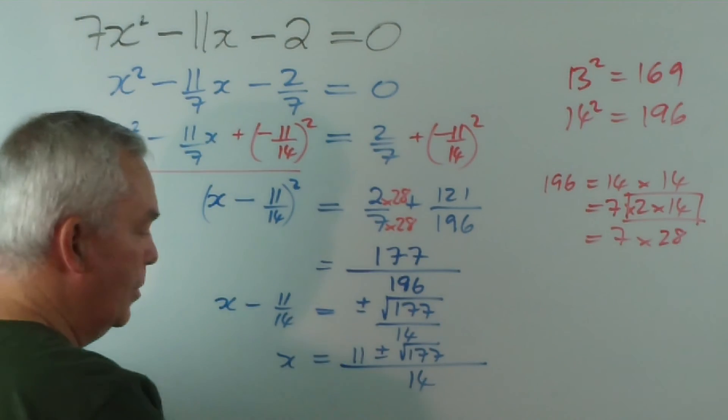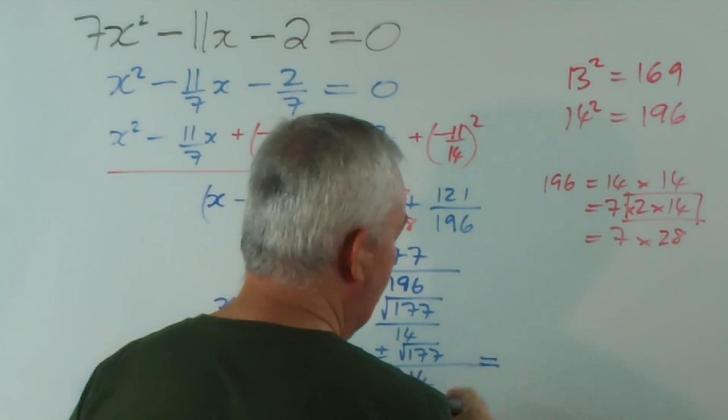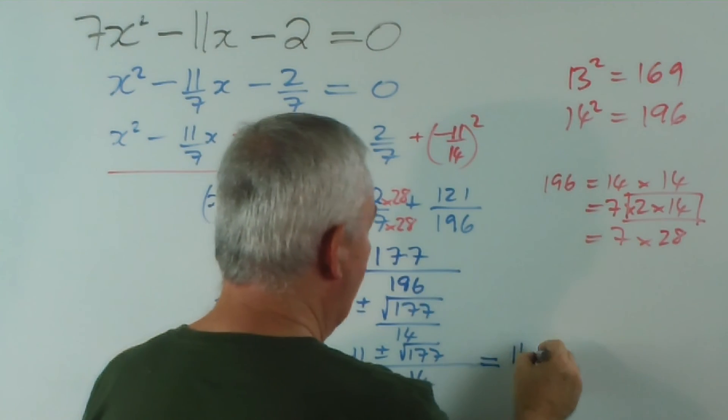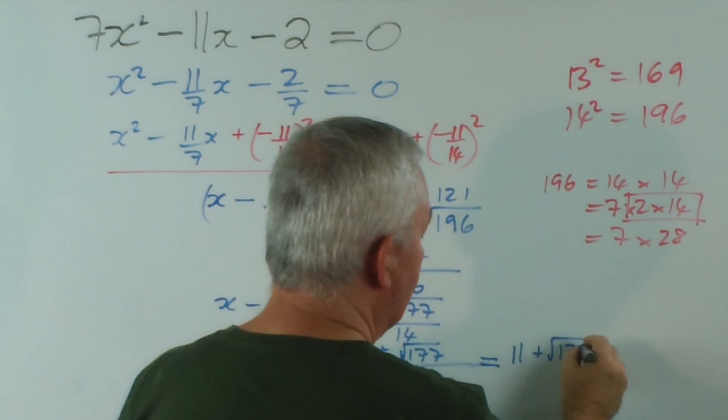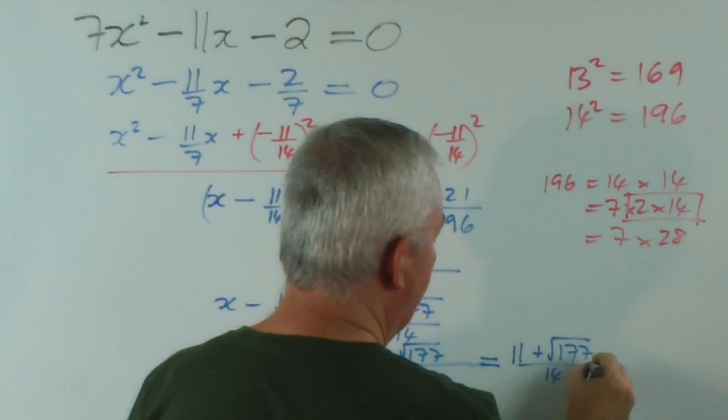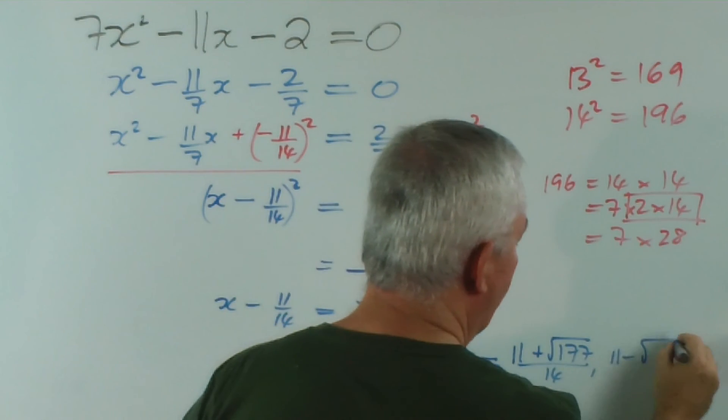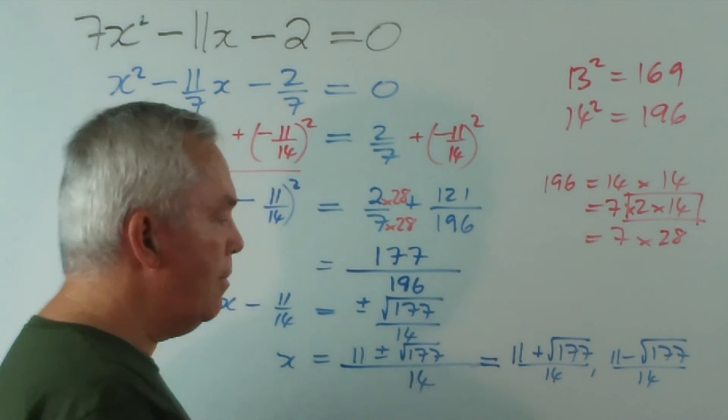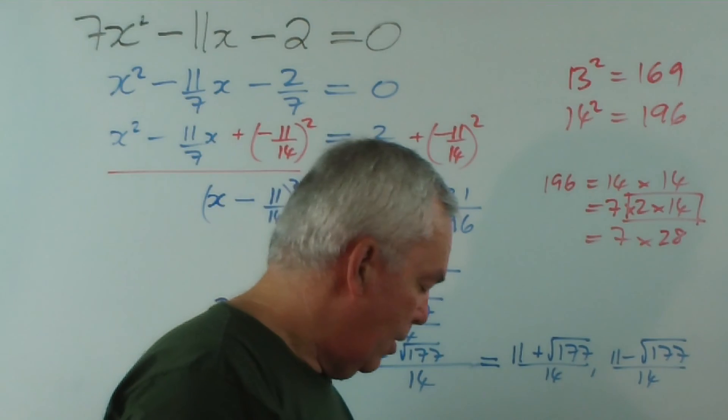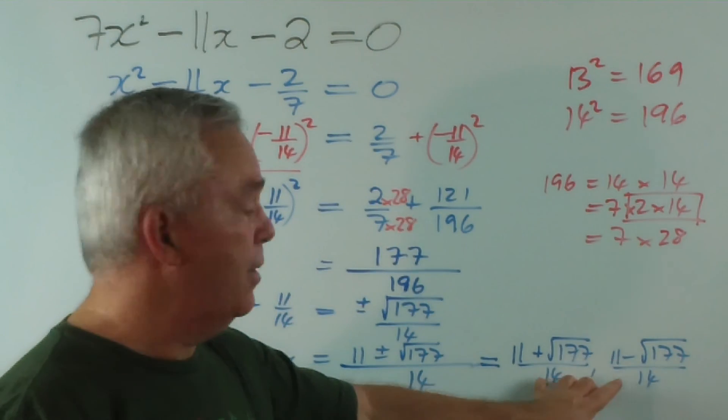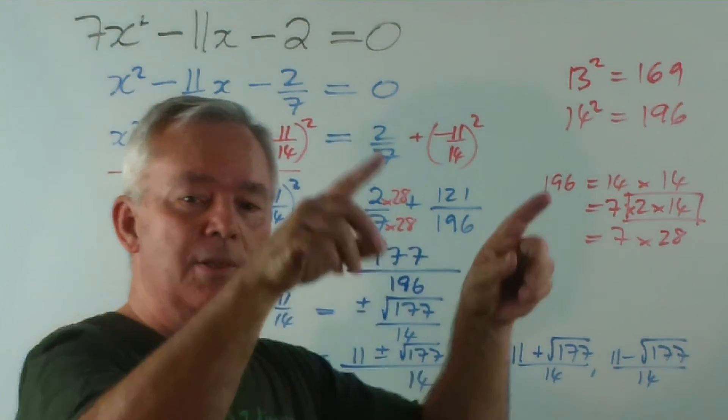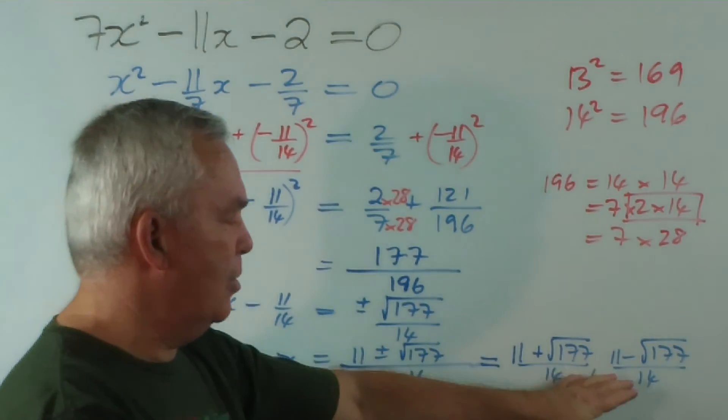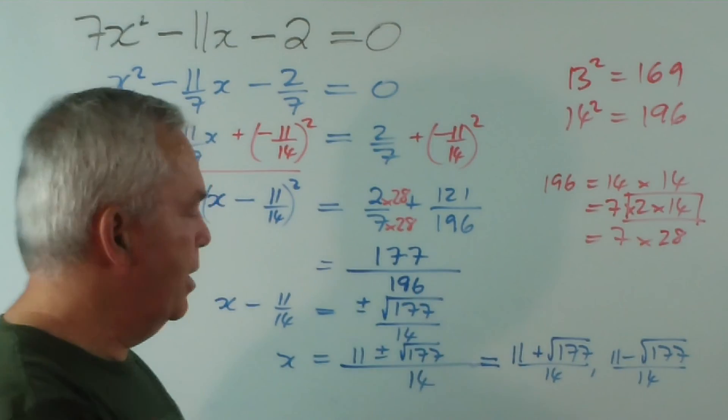And I think I'm too low on the board, so I will just go across here. That means the two zeroes or the two roots are 11 plus root 177 on 14, and 11 minus root 177 on 14. And you can find those two x values as decimals now, and plot them on the x-axis, and the parabola will go through those points. So they're two of our reference points, our roots, our zeroes, our x-intercepts.